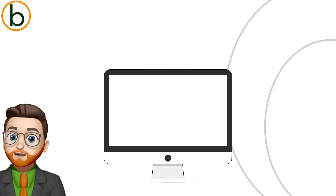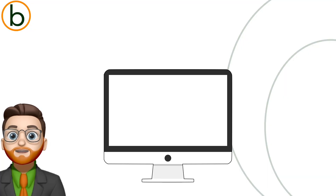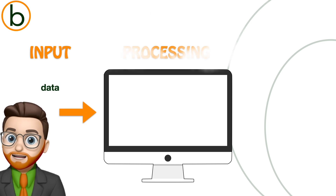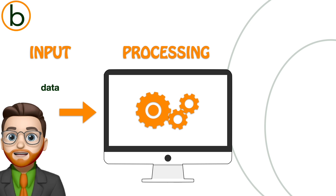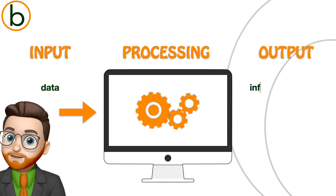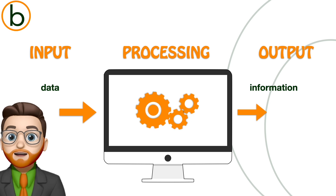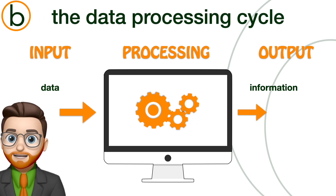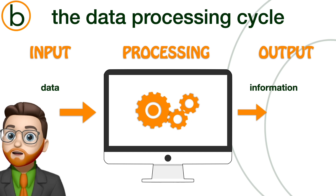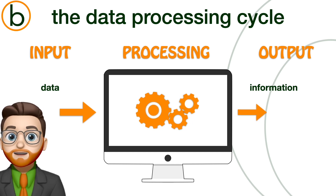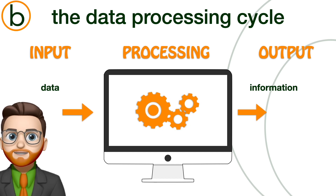Let's sum up this video. The computer uses input to receive data, processing to understand that data, and output to present the result — the information — to you. All of these steps together is what we call the data processing cycle. Whether it's a computer, smartphone, or game console, everything works according to this simple but clear and powerful process.